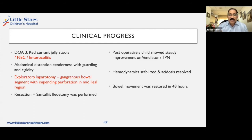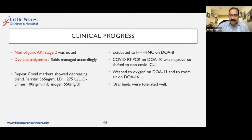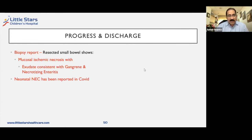An exploratory laparotomy was done and what we found was gangrenous bowel segment with impending perforation in the mid-ileal region. A resection was done and an ileostomy was performed. Post-op, the child was fine — on TPN, hemodynamics stabilized, acidosis resolved, and bowel movements were restored in 48 hours. Non-oliguric AKI was noted and managed. Repeat COVID markers showed a decreasing trend in ferritin, D-dimers, and fibrinogen. Child was extubated to HFNC on day 8, and on day 10 the COVID RT-PCR was negative, shifted to non-COVID ICU. Oral feeds were tolerated well. Biopsy report of the resected bowel showed mucosal ischemic necrosis with exudate consistent with gangrene and necrotizing enteritis, and the pathologist felt neonatal NEC has been reported in COVID as well.